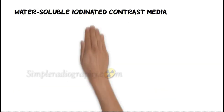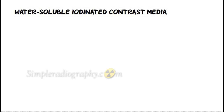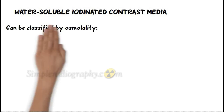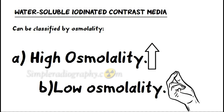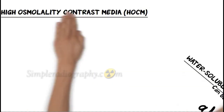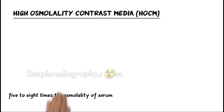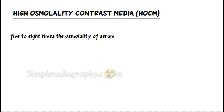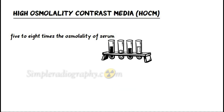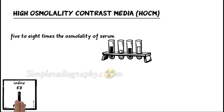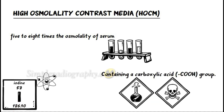Water-soluble iodinated contrast media can be classified by osmolality: high osmolality and low osmolality. High osmolality contrast media (HOCM) are approximately five to eight times the osmolality of serum. In general, HOCM are ionic compounds that include a benzene ring with three iodine atoms and a side chain containing a carboxylic acid group.